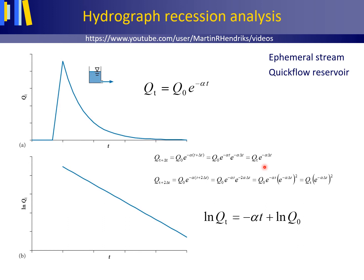Alpha ranges from 1,000 per day for deep groundwater to over 3 per day for overland flow. The equation can be rewritten in semi-logarithmic form, which plots as a straight line in a graph with ln(Qt) on the vertical axis and t on the horizontal axis. The value of alpha can simply be determined as the absolute value of the slope of this straight line.